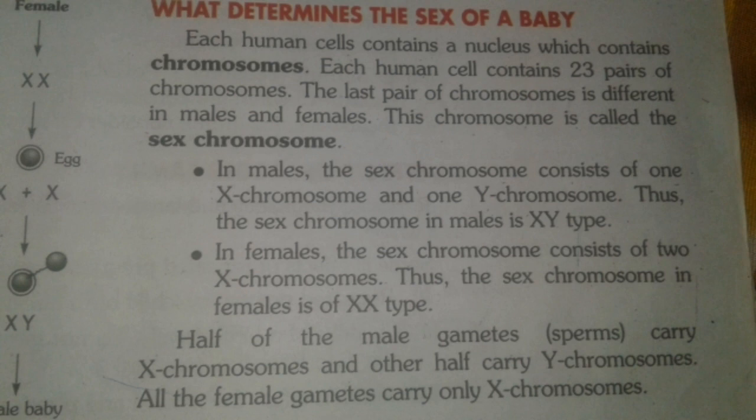In females, the sex chromosome consists of two X chromosomes — one X and another X. So the sex chromosome in females is XX type. To summarize: in males it is XY, and in females it is XX.